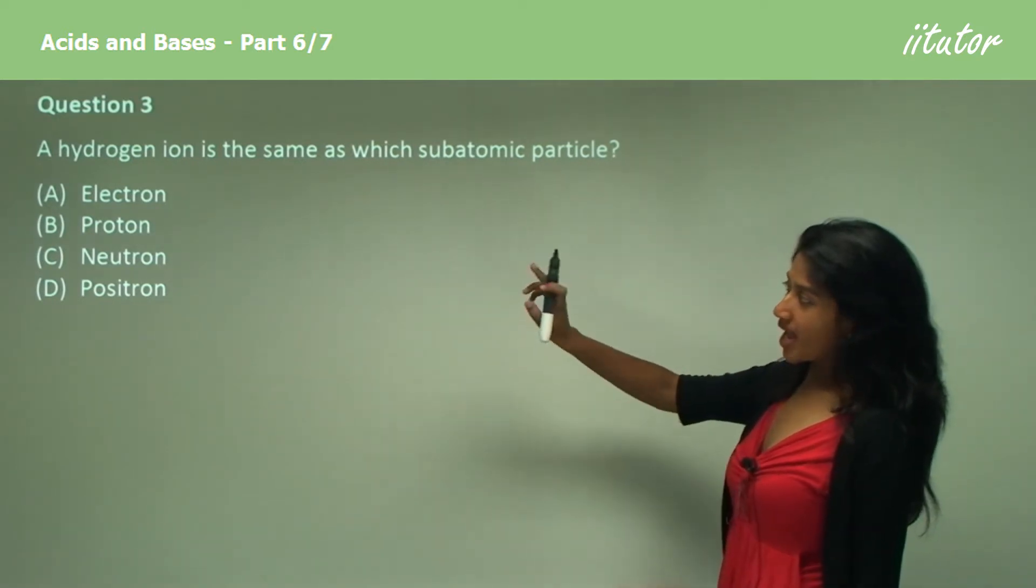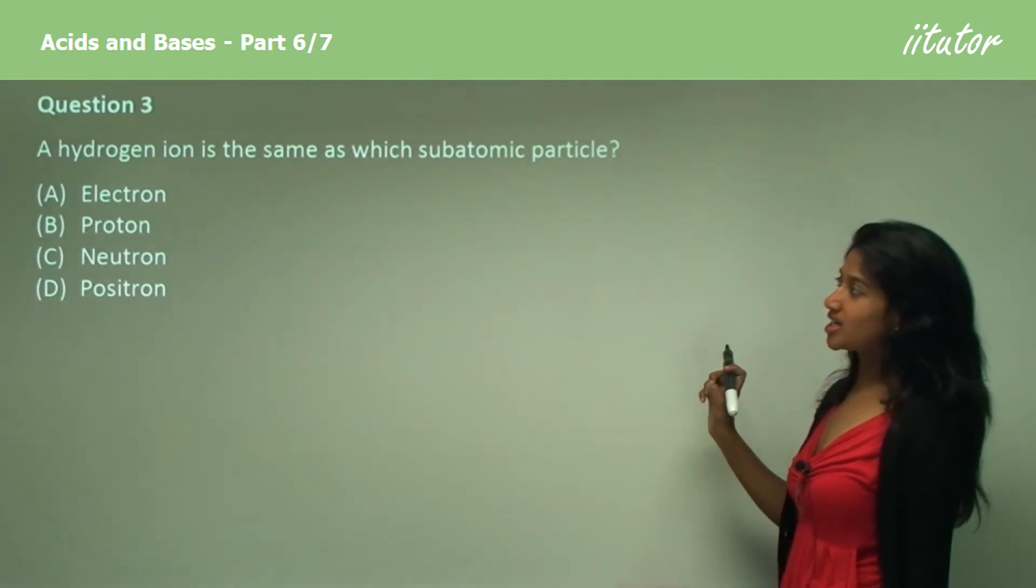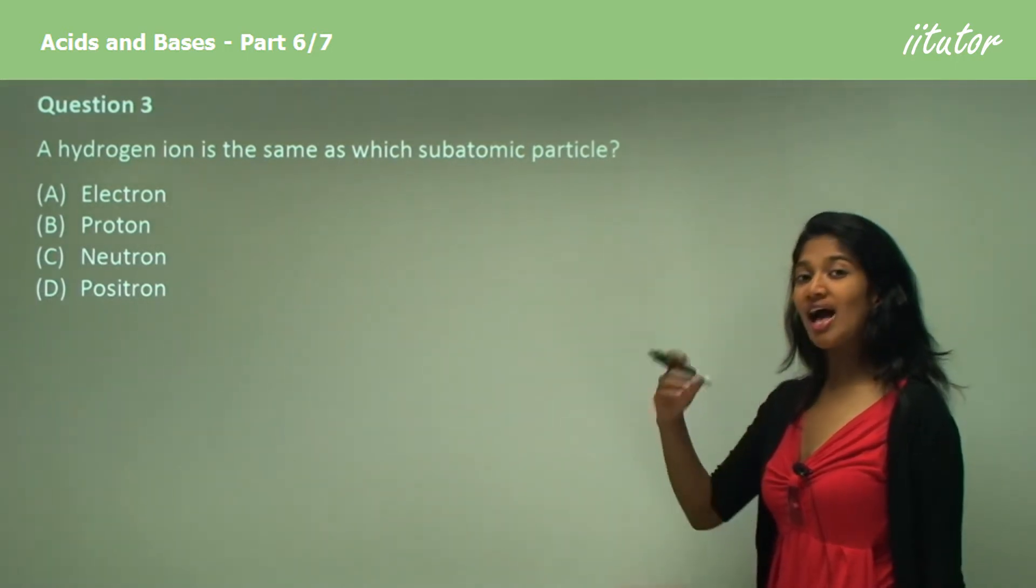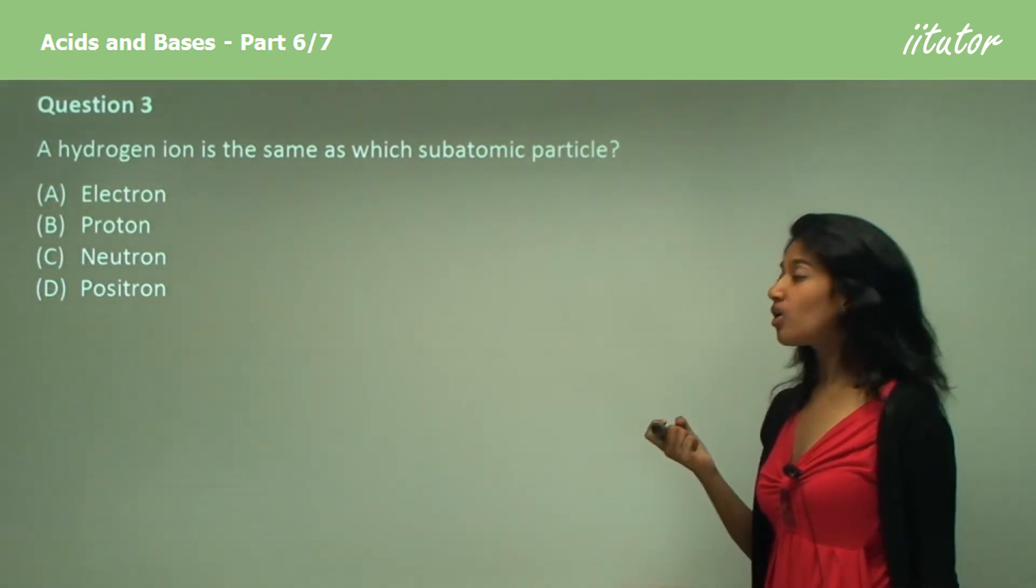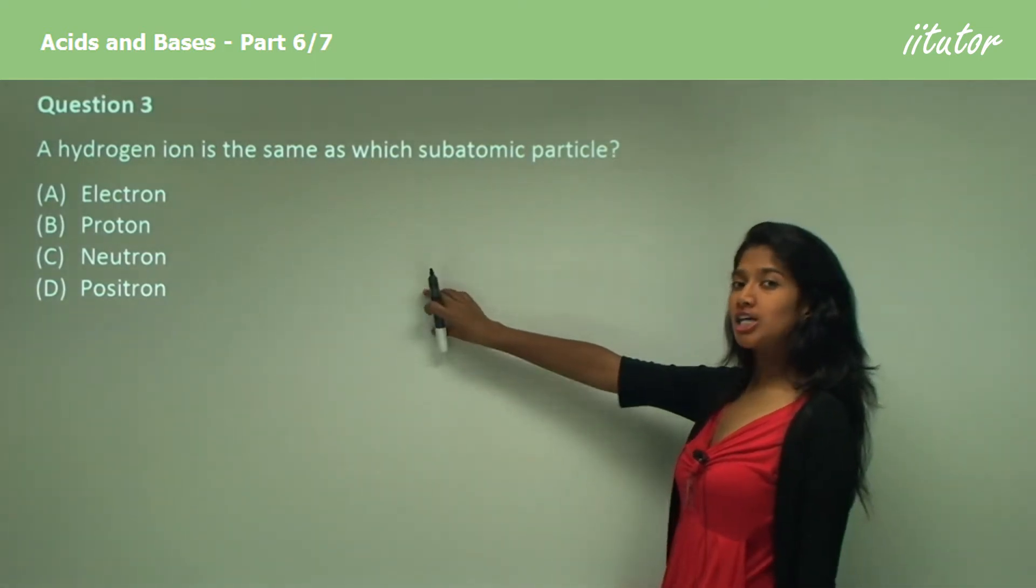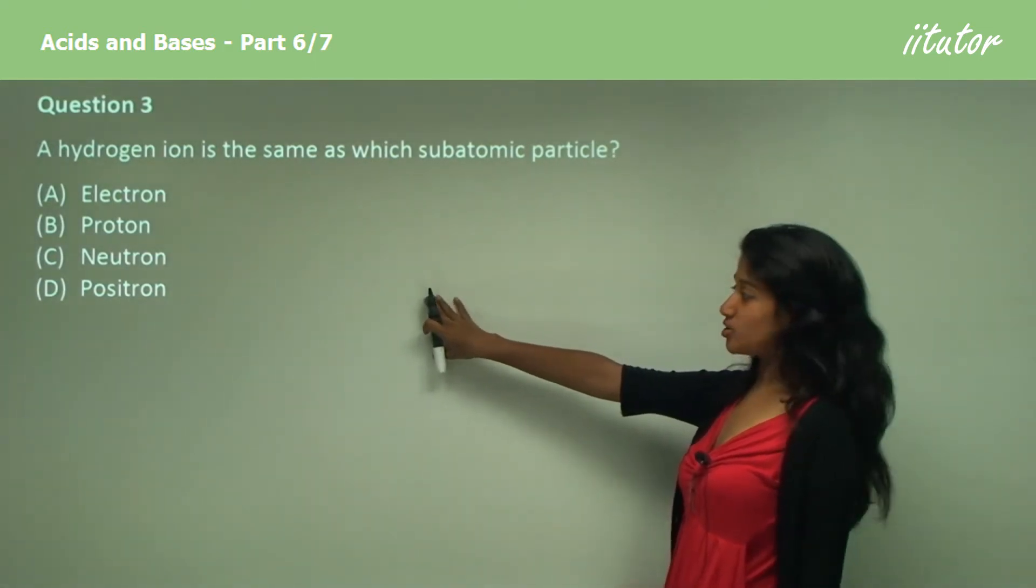So is it A? A is an electron, and a hydrogen ion is not an electron, because a hydrogen ion has lost an electron, so it only has a proton with it. Is it a neutron? Hydrogen does not contain any neutrons.